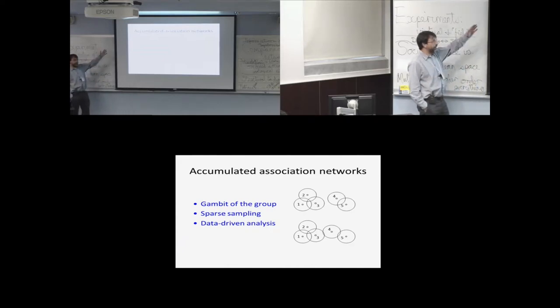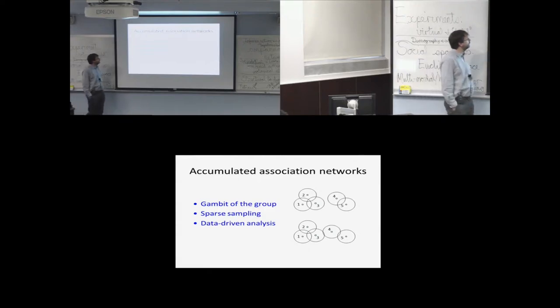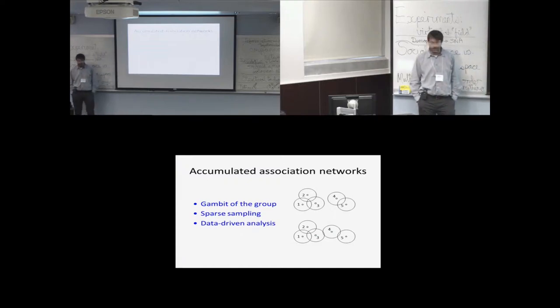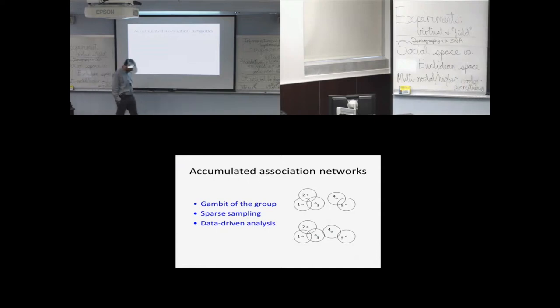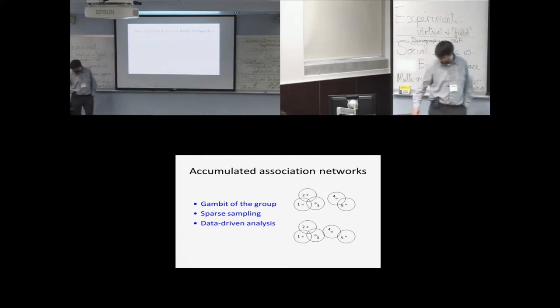So I got into this business thinking about accumulated, aggregated association networks in which some definition of group was made based on spatial proximity. And these things were sampled extremely sparsely. And so we were forced, I thought, and I still think, to be fairly low-key in the sorts of tests we could do to see whether or not there was some biological signal amongst all of the mess that's introduced by the way that we were collecting the data.